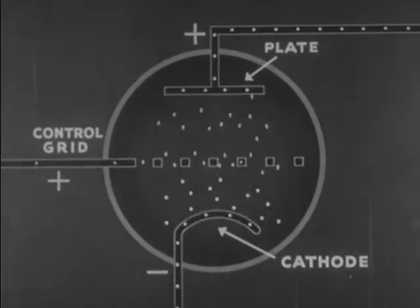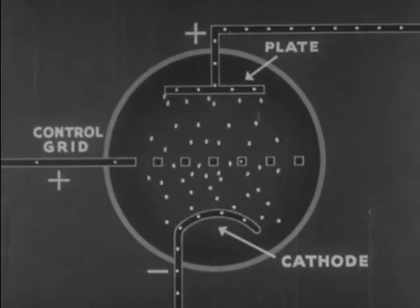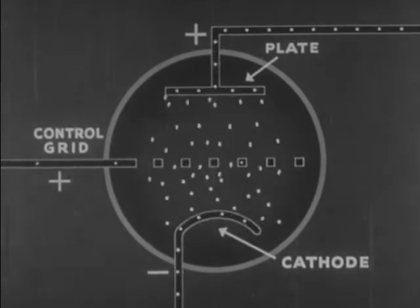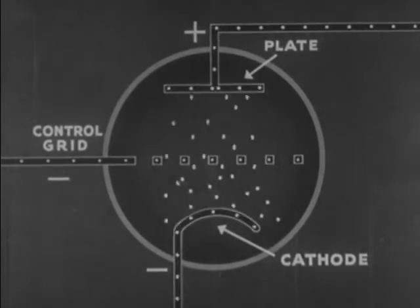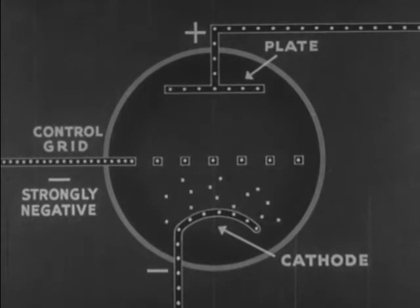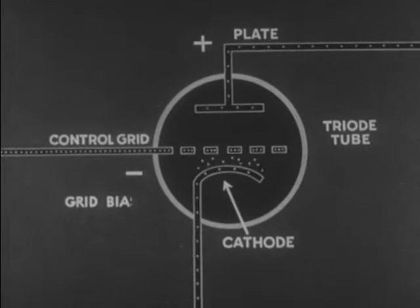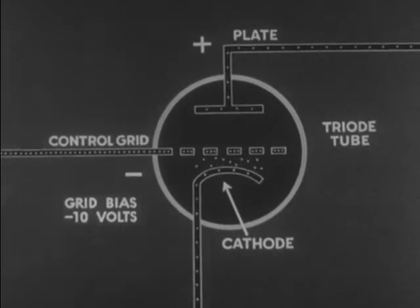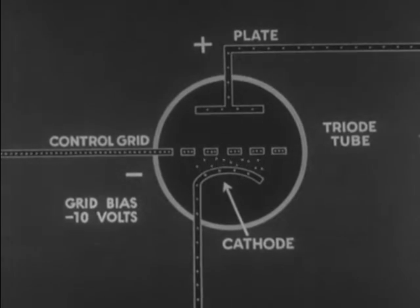With the grid positive, many electrons pass from cathode to plate. If the grid is given a negative charge, it repels the negative electrons and fewer of them reach the plate. The grid bias may be so strongly negative as to entirely stop the flow of current through the tube. This negative grid bias, beyond which there is no current flow from cathode to plate, is known as the cutoff bias.